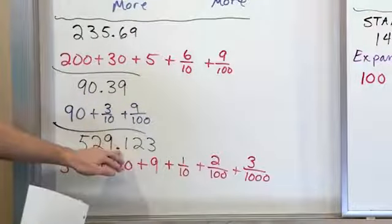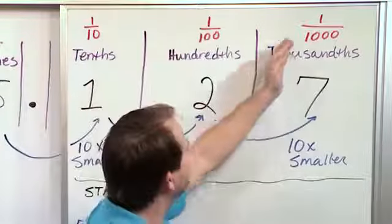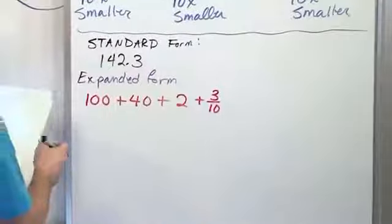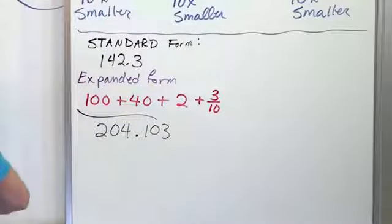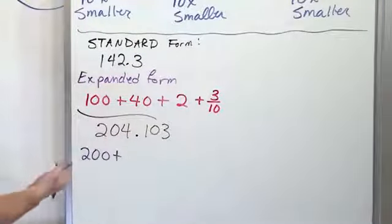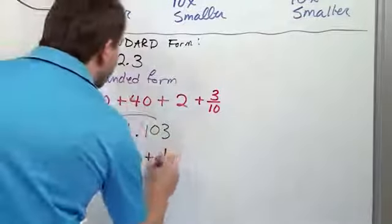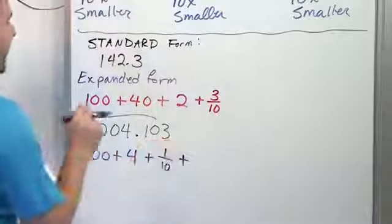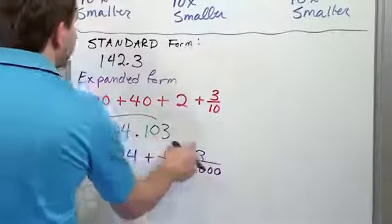So you literally just reconstruct the number based on what you're given. Let's do one more: 204.103. How do we write this in expanded form? We have two in the hundreds place, so this is 200. We have zero in the tens place, so we don't write that — it's worth nothing. The four is in the ones place, so we say plus four. Then on the right-hand side, the one is in the tenths place so that's one over ten. The zero in the hundredths place we skip. The three is in the thousandths place, so we write three over one thousand. So it's 200 plus 4 plus one-tenth plus three one-thousandths.